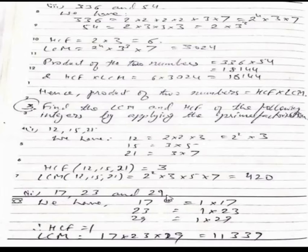Second set is 17, 23 and 29. We have prime factors 1 into 17, 1 into 23, 1 into 29. So HCF is 1 and LCM is 11339.